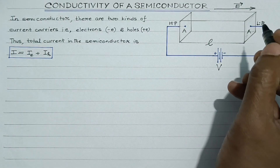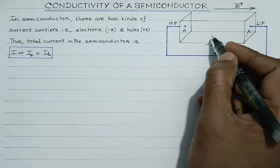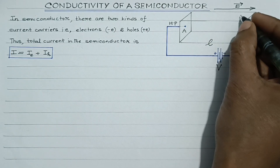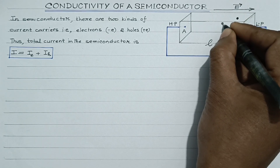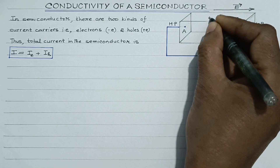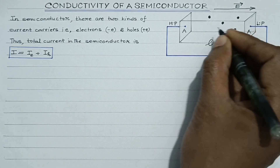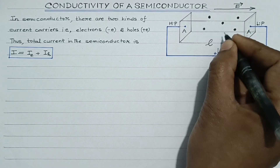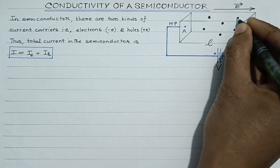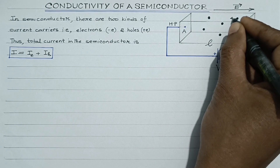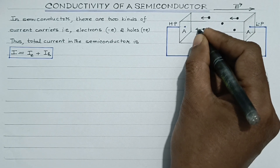Now students, intrinsic me aapko pata hi hai, iske andar free electrons bhi hongi aur utni hi saari holes bhi hongi. Toh, electrons being negatively charged carriers, they will drift in a direction opposite to that of the electric field. That is, electrons inside the semiconductor will move from lower potential to higher potential. Yeh jo dark dots hain, yeh electrons ke liye represent kiya hua hai, toh yeh is direction mein move karega.